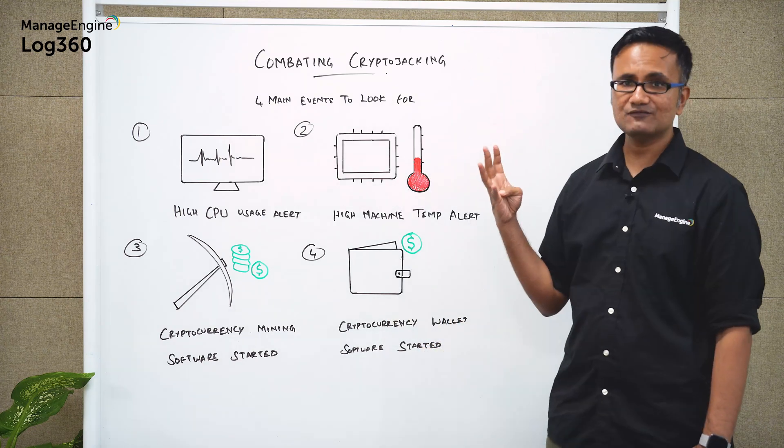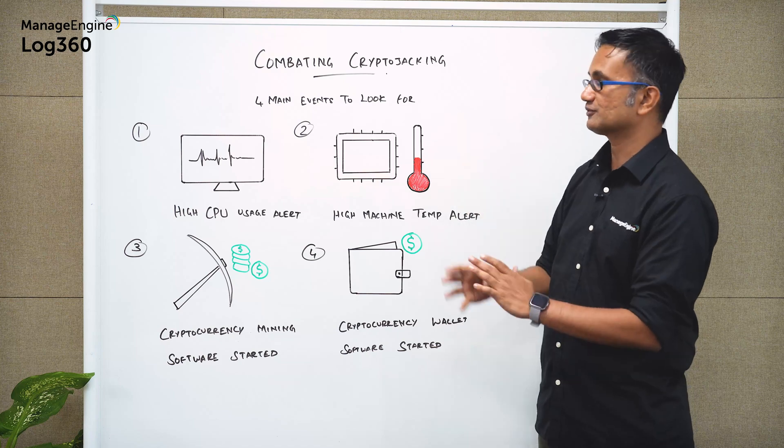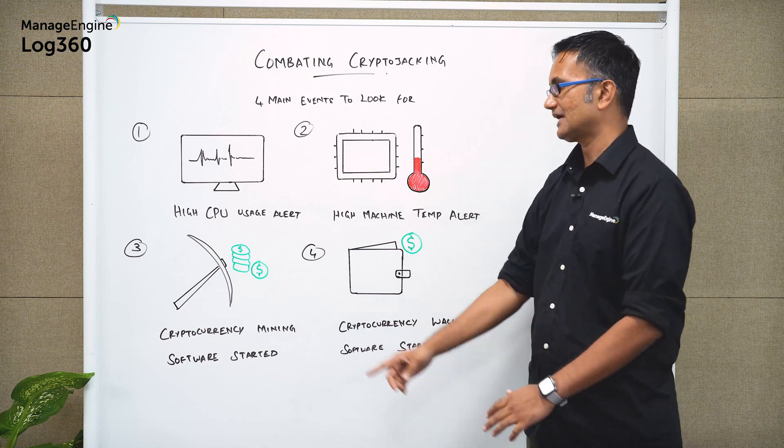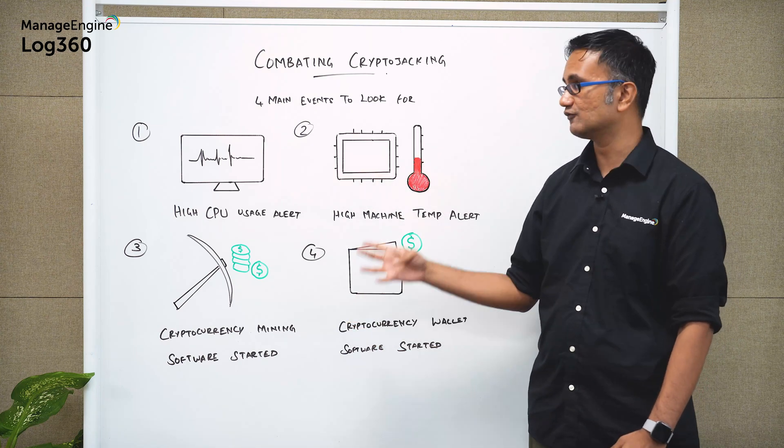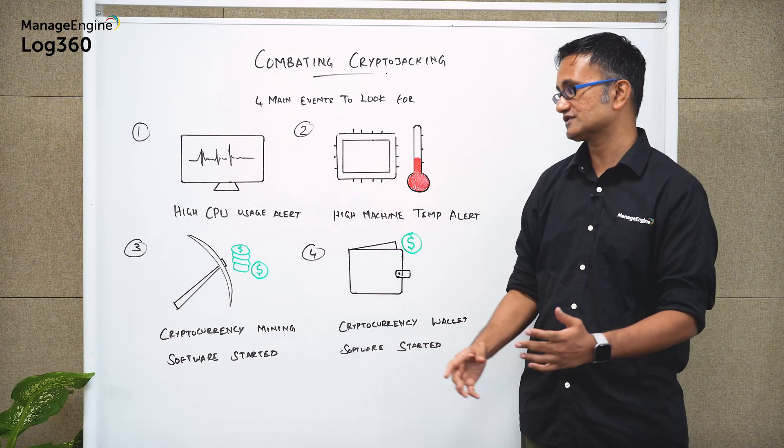Now there are four main ways in which you can look for crypto jacking happening within your network and those four main ways are right here. Four events rather. The first is high CPU usage alert.